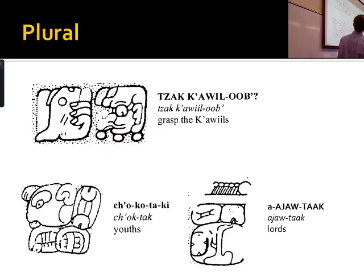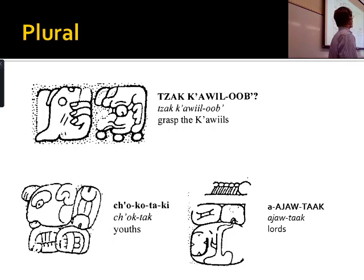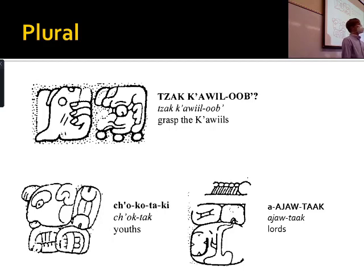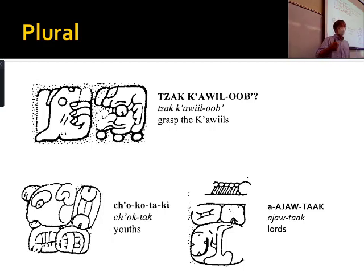Gender and plural are relatively straightforward. As you remember, pronouns are genderless, and many Maya words are genderless. Plural is marked only occasionally, and there are two markers: a generic 'ob' plural, and a special plural that survives only in one modern Mayan language, Chortí — where it's 'tak.' In Chortí it applies only to men, women, and children.